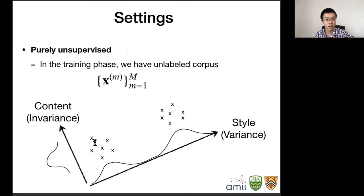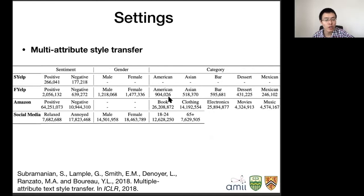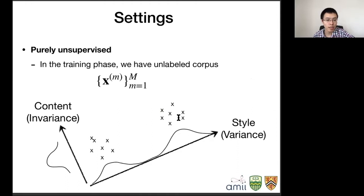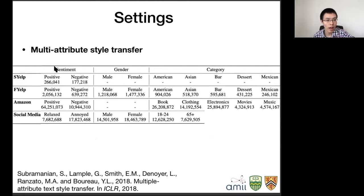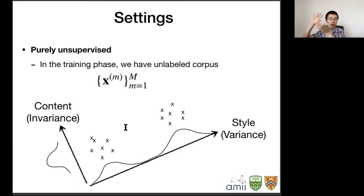I also want to mention multi-attribute style transfer. In previous examples we only talked about a binary style, but datasets can have multiple styles like sentiment, gender, or dataset-specific categories, each with different classes. This is not very different conceptually — in a high-dimensional space, some dimensions are varying and represent styles with different clusters, while other dimensions are invariant and represent content.